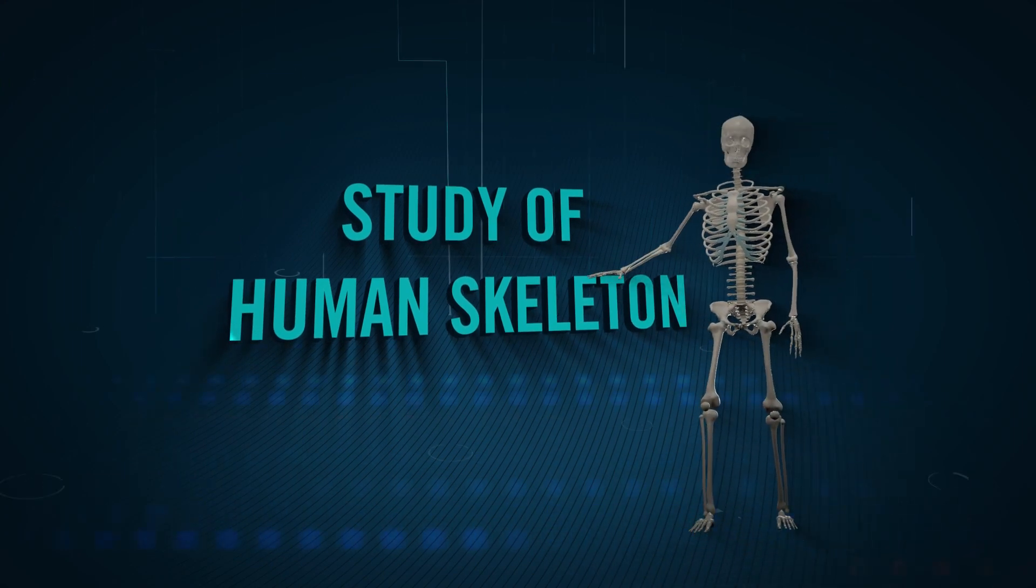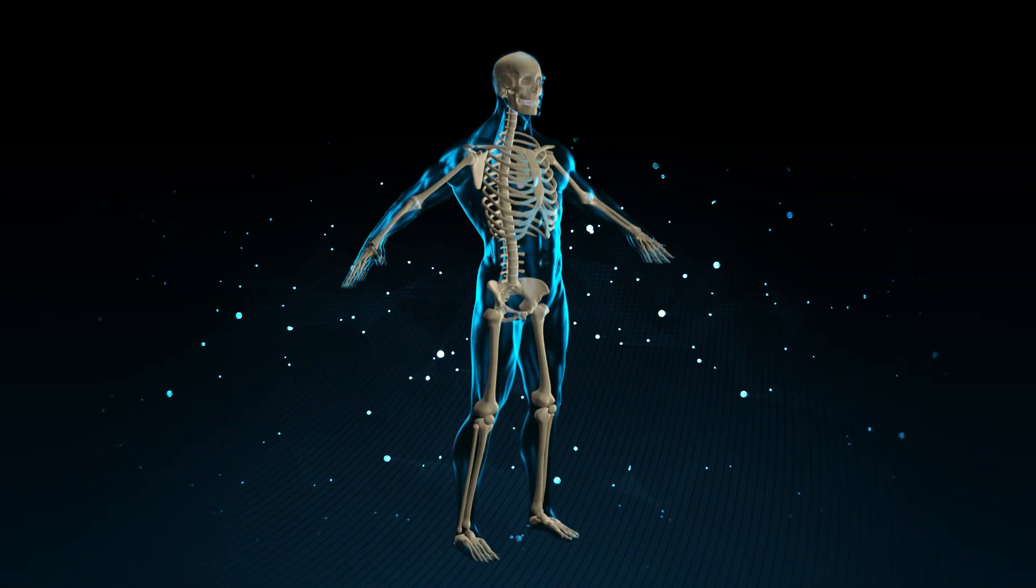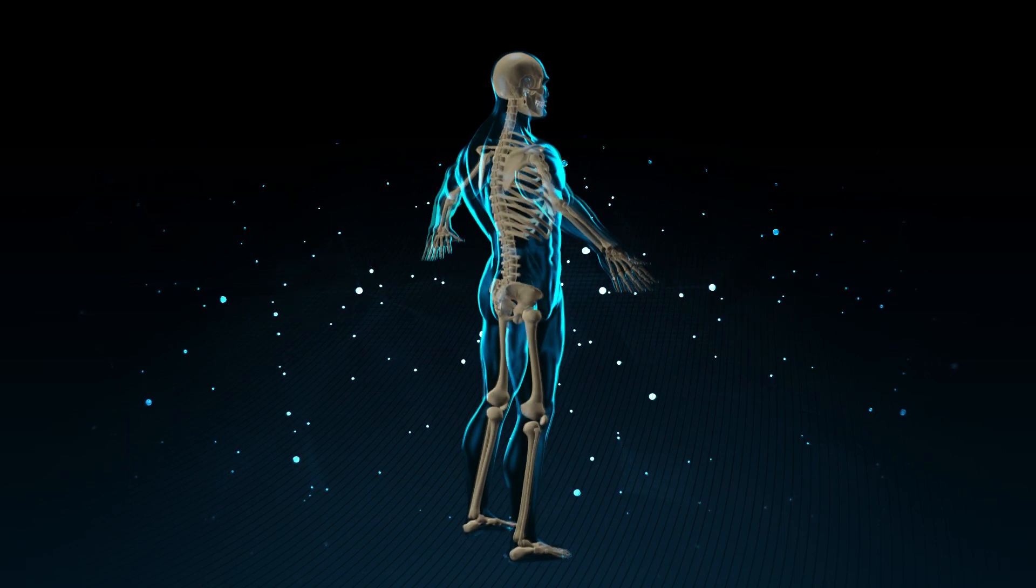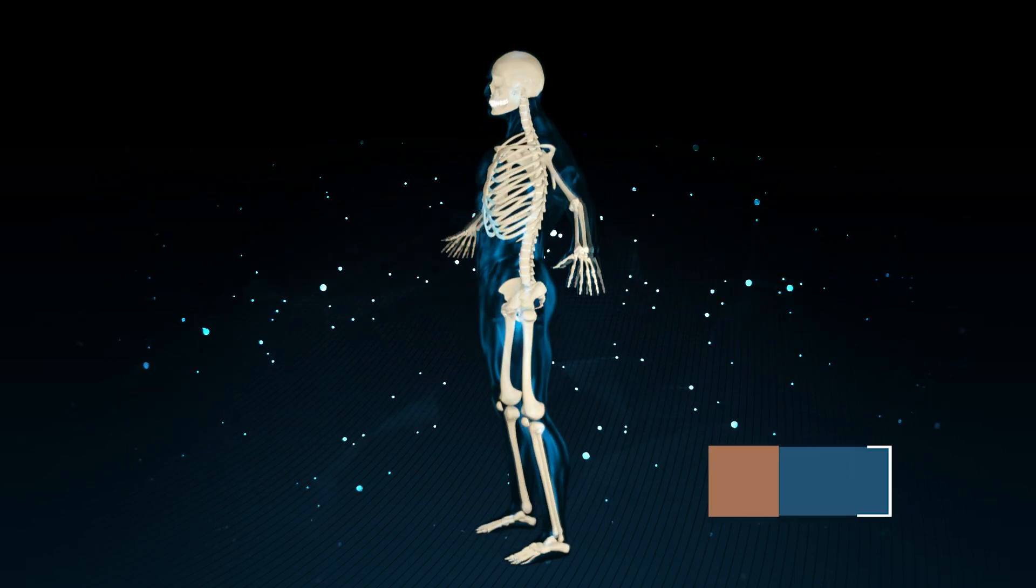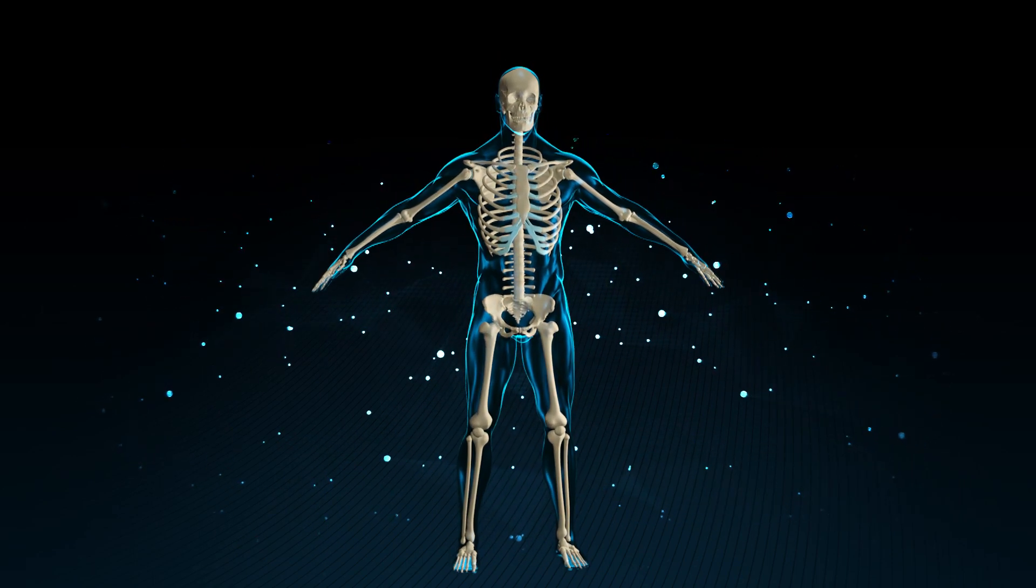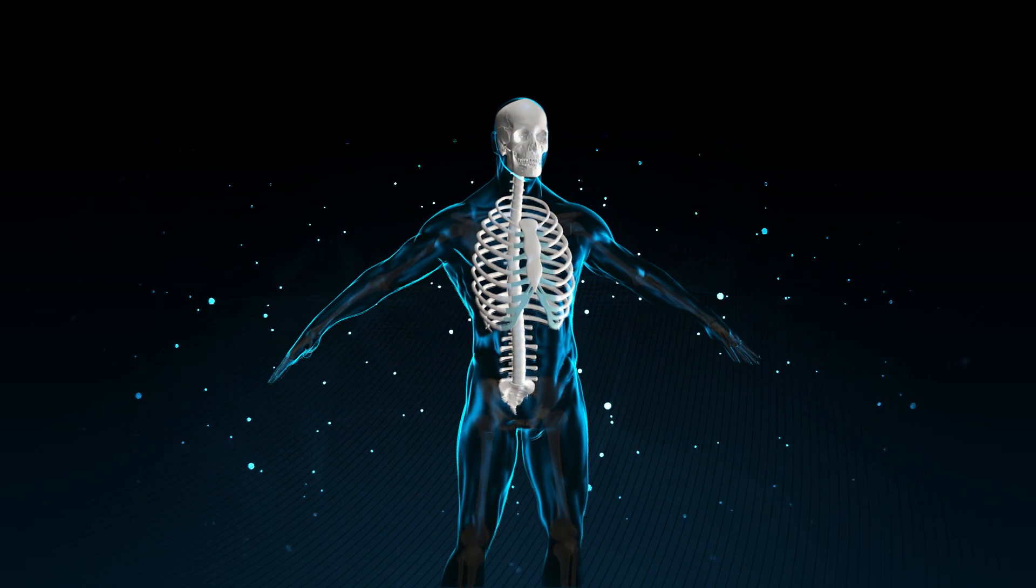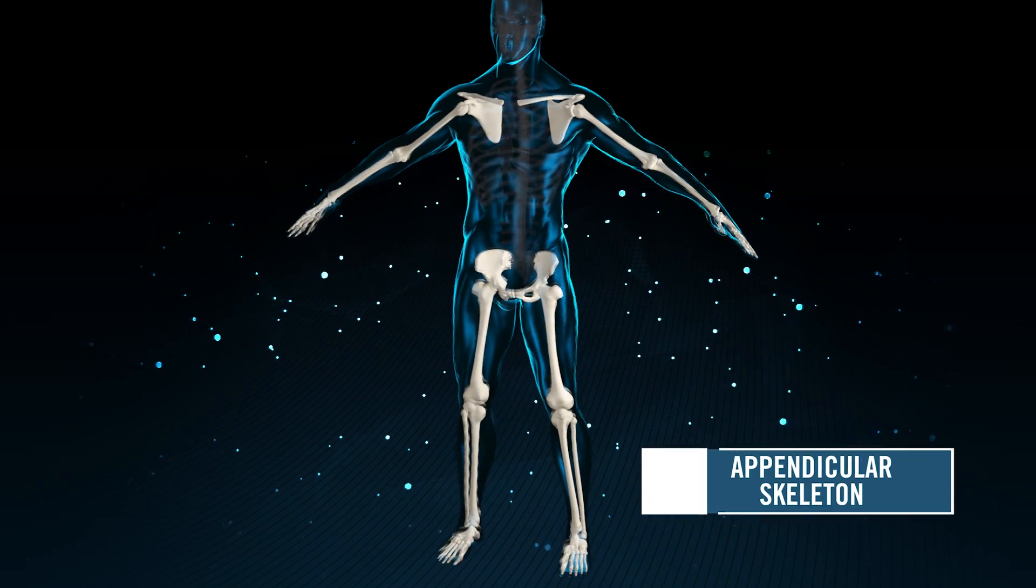Study of human skeleton: the skeleton system is a framework of bones, cartilages, and ligaments which consists of all organs. The human skeleton in adults is composed of 206 bones. Basically, human skeleton is divided into two categories: axial skeleton and appendicular skeleton.